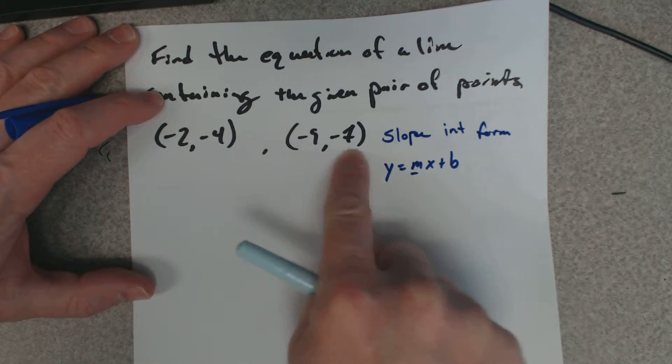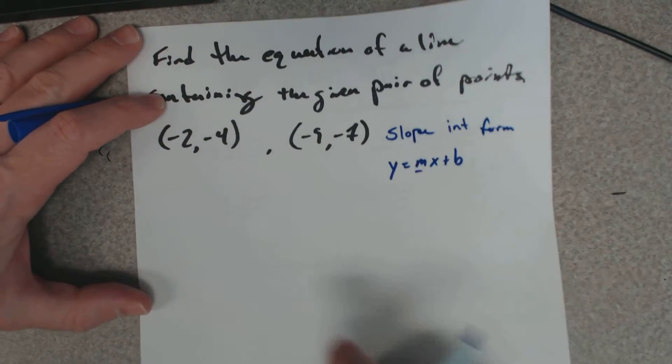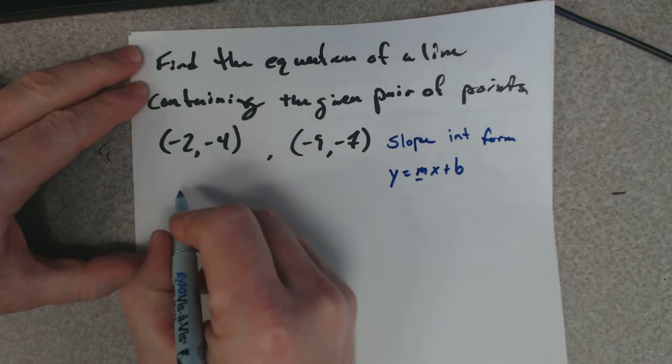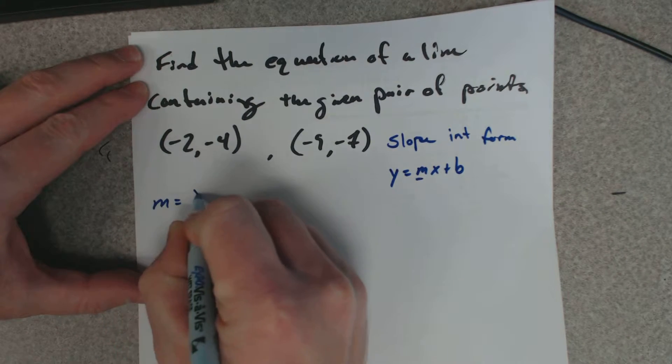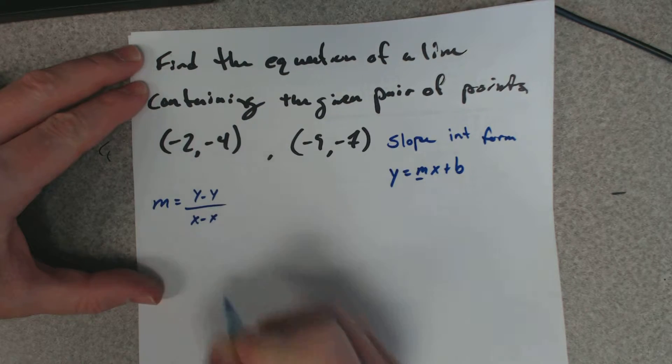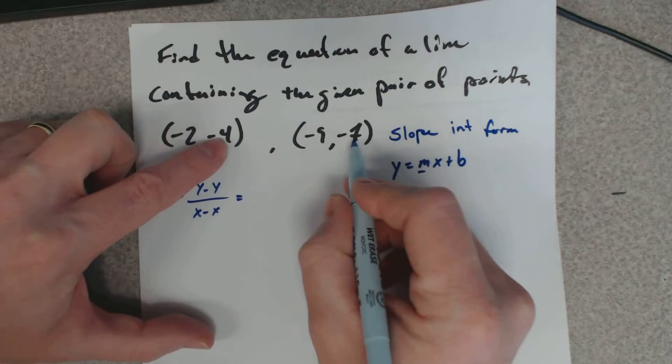So what we need to do first is find the slope, because we don't have the slope, we don't have the y-intercept. These are just two points off the axes. First, we want to find the slope. Remember, the slope: you subtract the y values and then you subtract the x values.